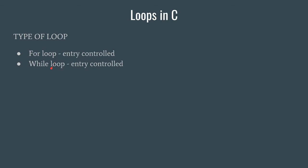The next type is the while loop, which is also an entry controlled loop — there's just a basic syntactic difference we'll see when we code. The third type is the do-while loop, which is an exit controlled loop. The difference between entry and exit controlled loops is that entry controlled loops run only if the condition is satisfied — if the condition fails the first time, the loop won't execute even once. But in a do-while loop, whatever the condition may be, the loop will run at least once, because the condition checking is done at the end.